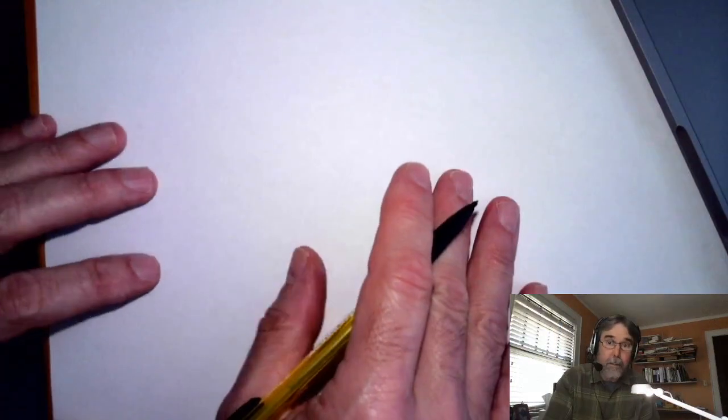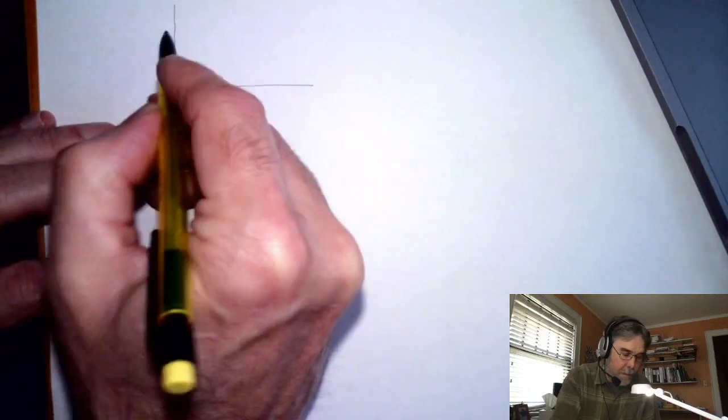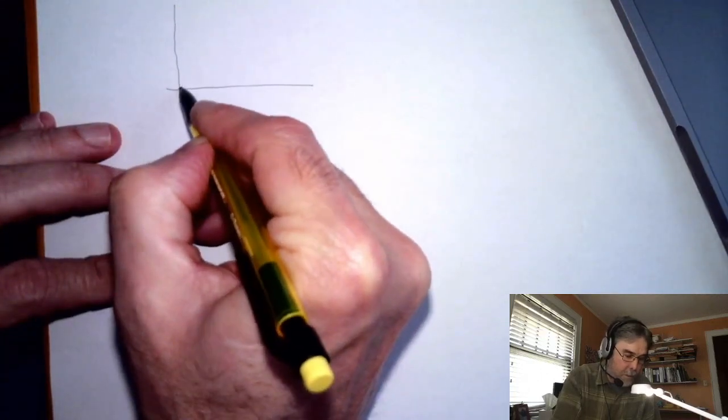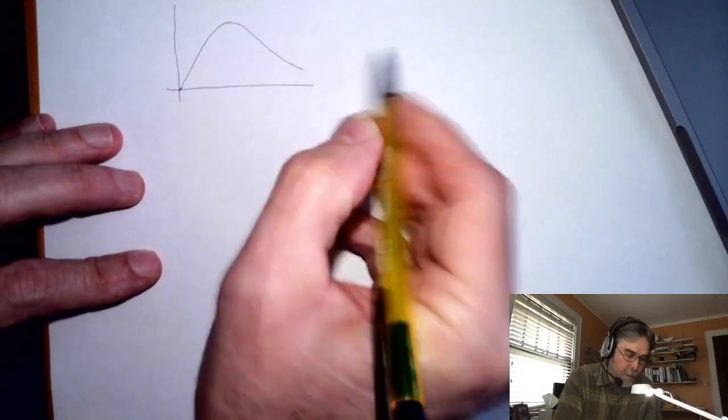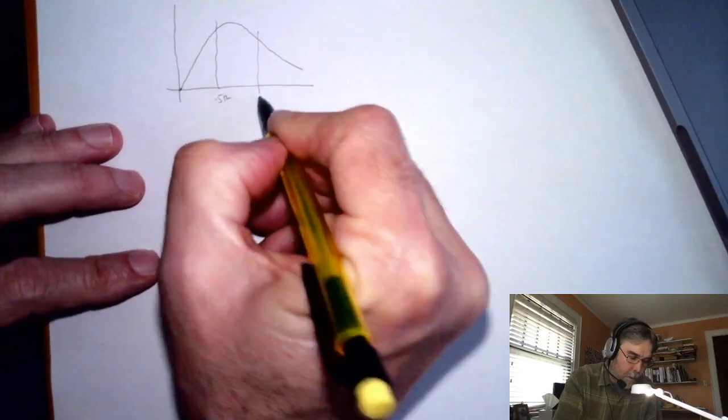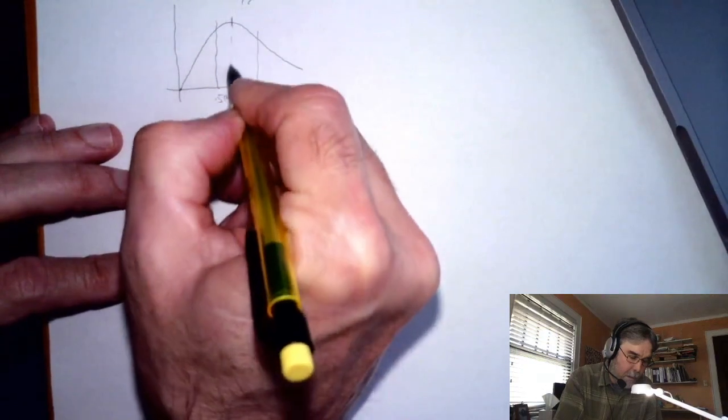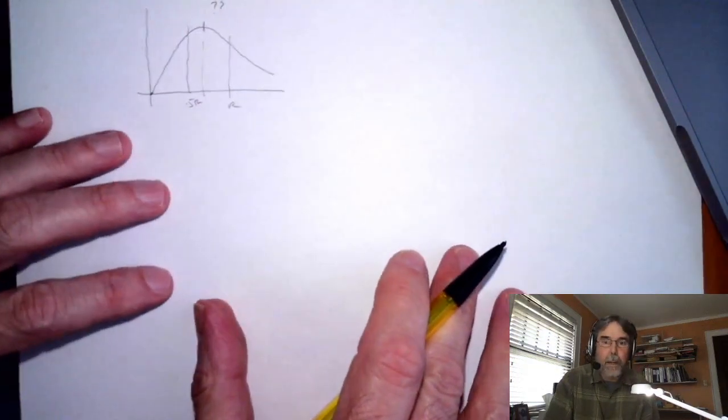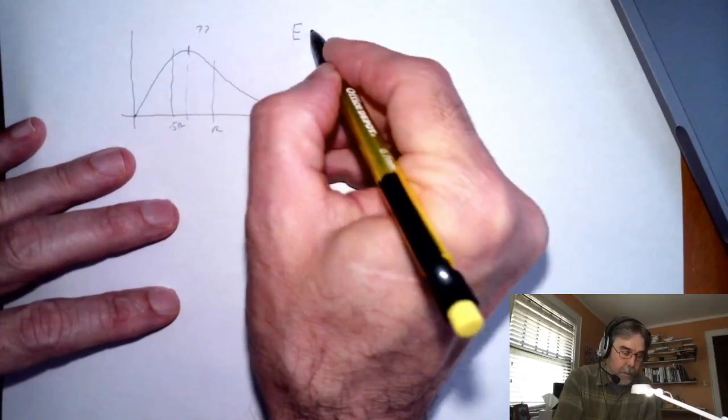I'm going to go ahead and draw the function here so we can see how to think about it. It starts at zero, it goes up, reaches a maximum somewhere, and then starts to come down. And we know that maximum is somewhere between 0.5r and r, somewhere in there, what is that value of z?